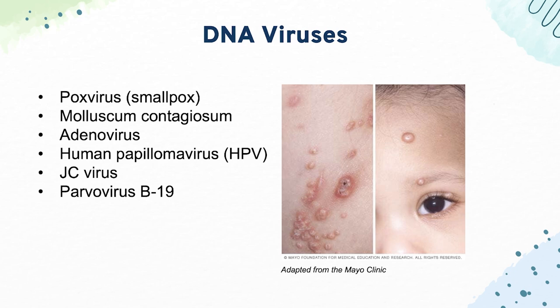Then we have human papillomavirus or HPV — know which serotypes are associated with cancers versus warts. For JC virus, we have progressive multifocal leukoencephalopathy, usually in HIV patients. For parvovirus B19, that causes a slapped cheek rash, aplastic crisis in sickle cell, pure red blood cell aplasia, and rheumatoid arthritis-like symptoms in adults — often those who work in daycares or preschools.